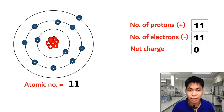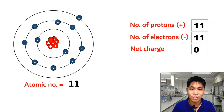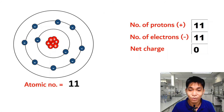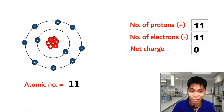Therefore, instead of looking for seven more electrons, this atom will simply remove its outermost valence electron. Once that electron is removed, the outermost shell no longer has electrons, so we disregard it. The second shell becomes the outermost shell, and it has 8 valence electrons. That means our atom, having lost one electron, becomes stable.